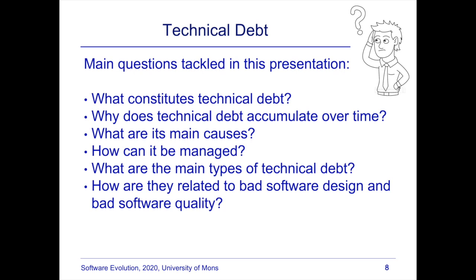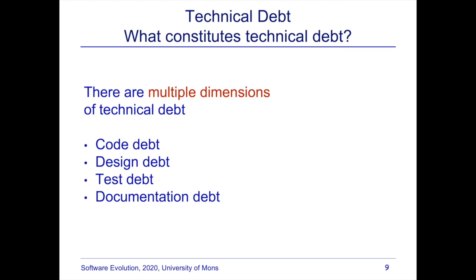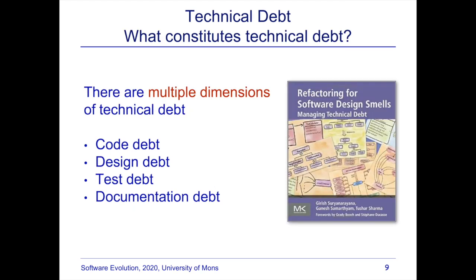In this presentation I will focus on several questions: what constitutes technical debt, why it tends to accumulate, what are its main causes, how we can manage it, and what are the main types of technical debt. One well-known book on managing technical debt — subtitled 'Refactoring for Software Design Smells' — focuses on four types: source code debt, design debt, testing debt, and documentation debt.